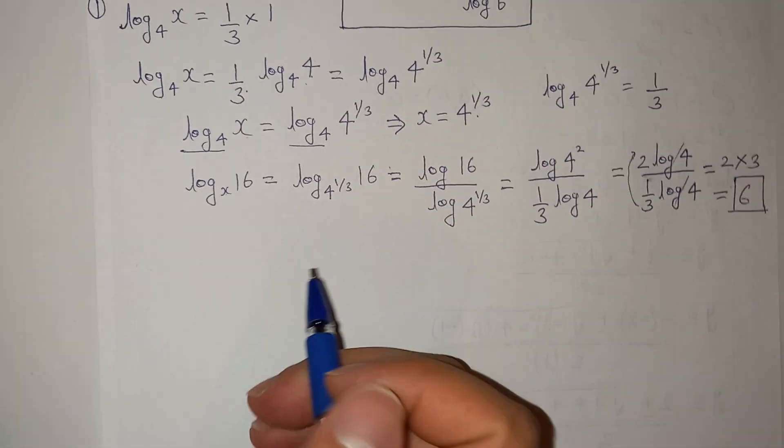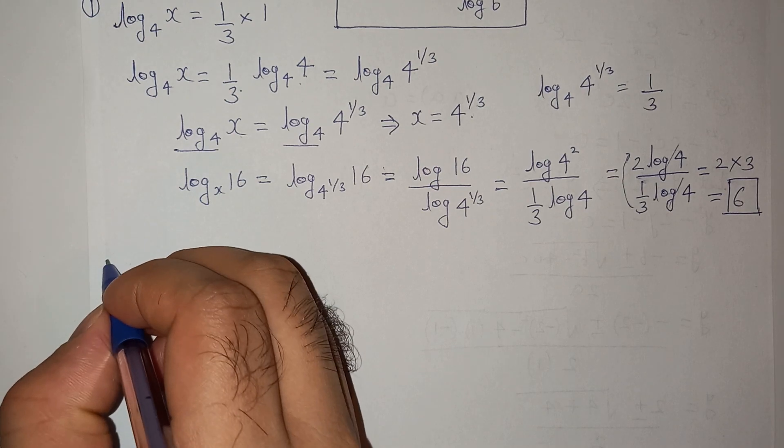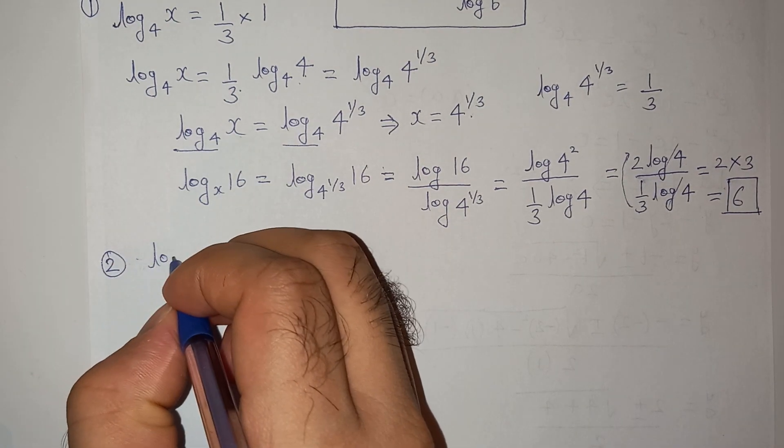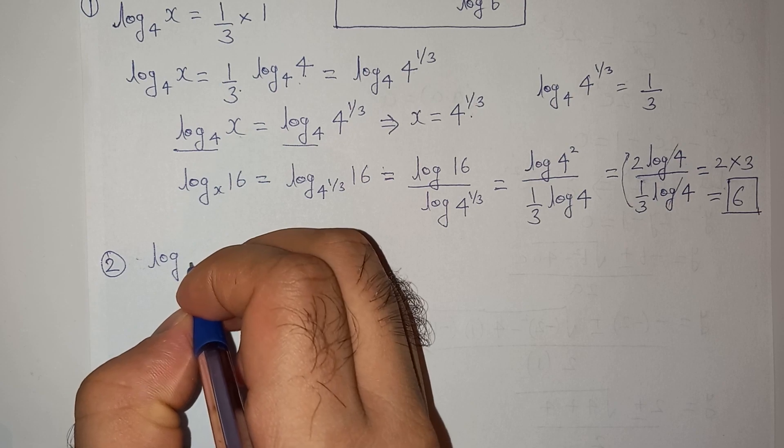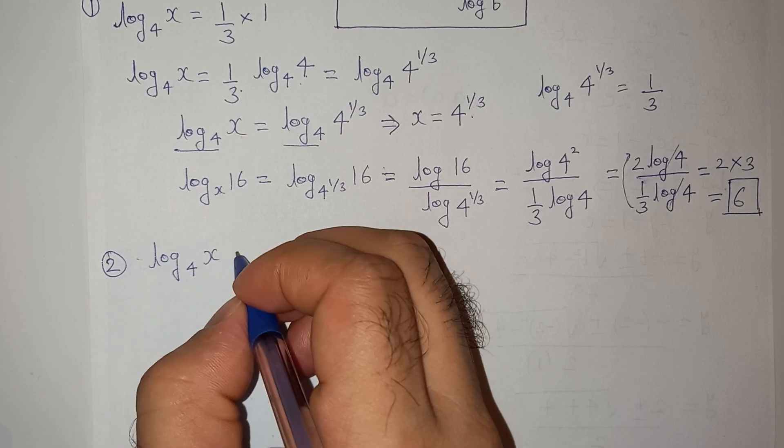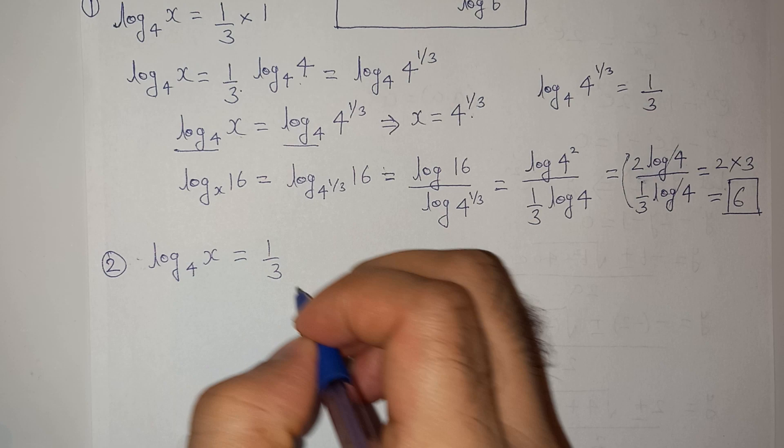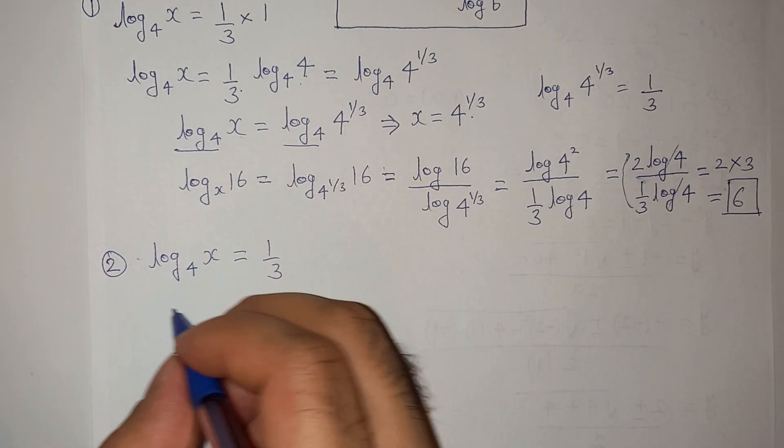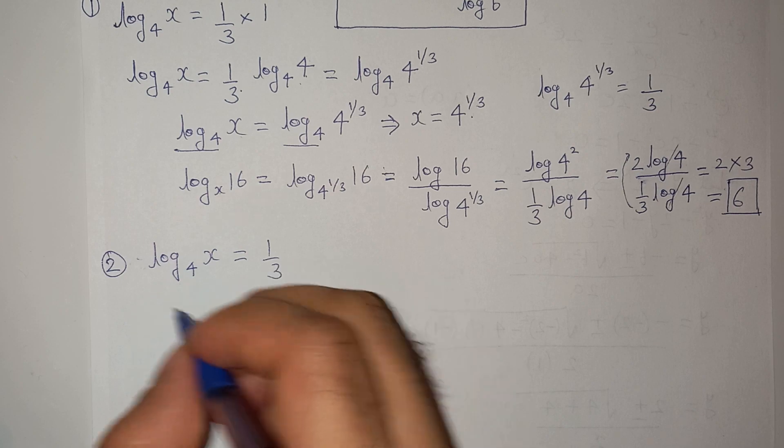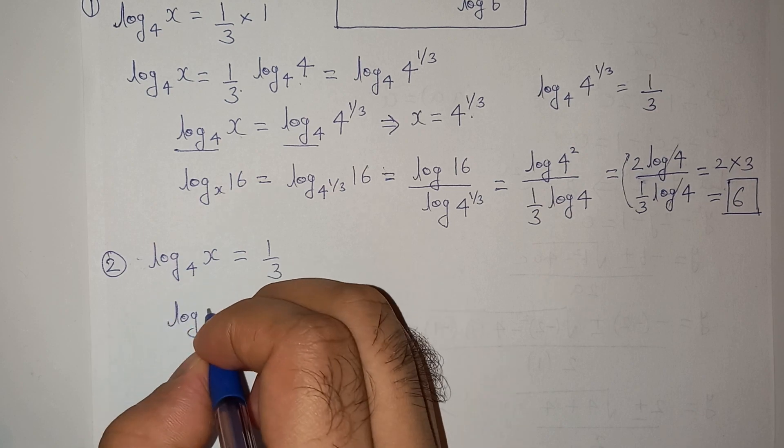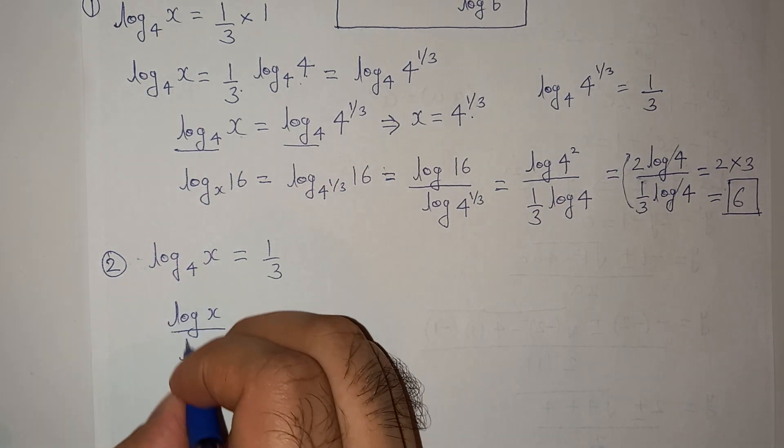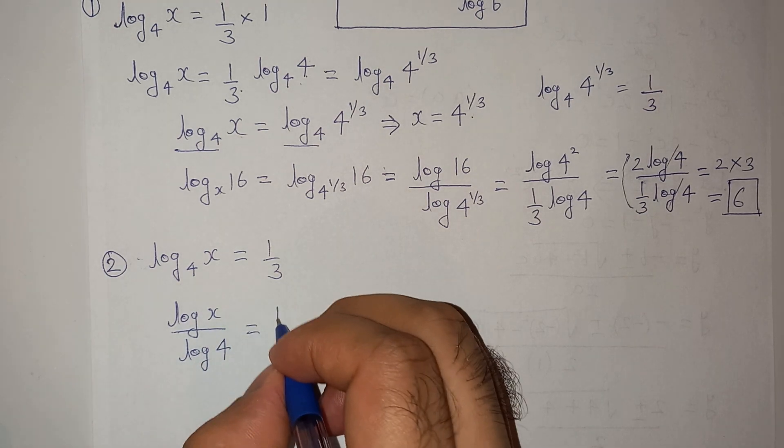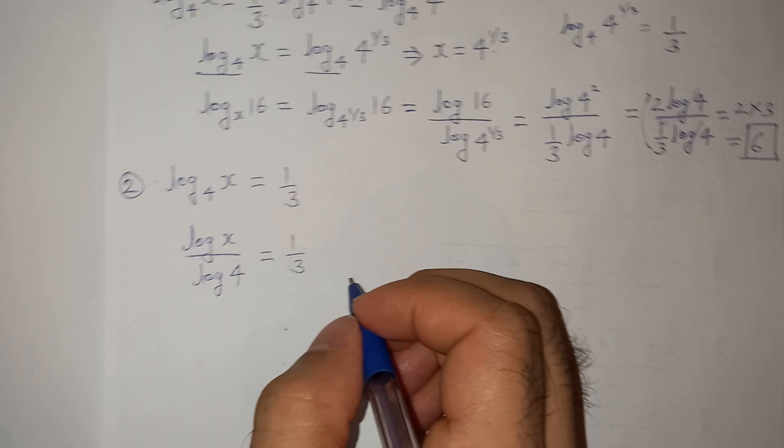Let's do it step by step. This is the second method. So the question says log₄x = 1/3. We can write this as, per the change of base formula, log(x)/log(4) = 1/3.